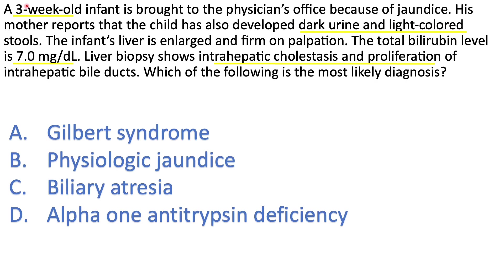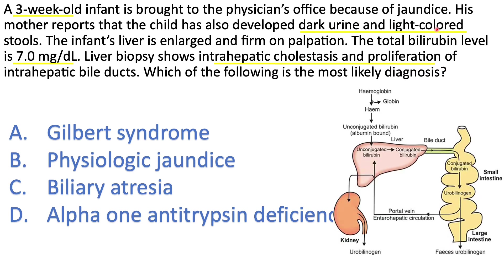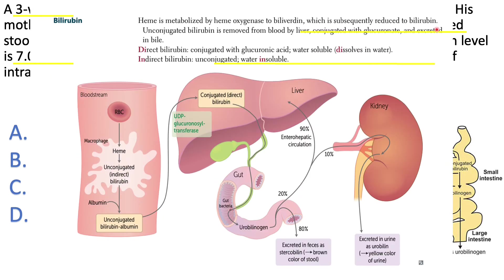Next question: a three-week-old infant is brought to the physician's office because of jaundice. Note that three weeks is past the limit of physiological jaundice, which usually disappears after two weeks — so whatever is going on here is pathologic. I should exclude physiologic jaundice from the start. The mother reports that the child has also developed dark urine and light colored stools.